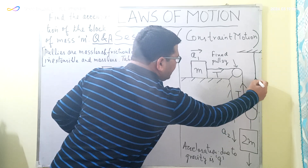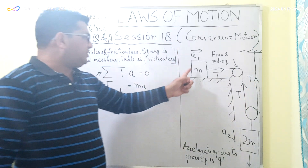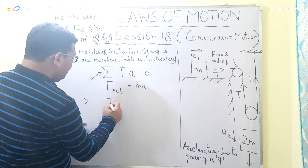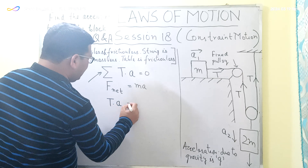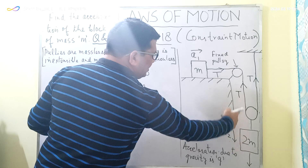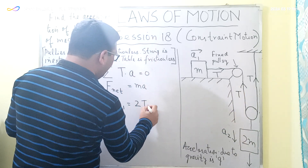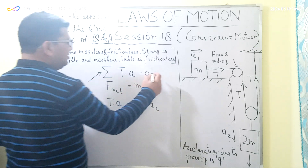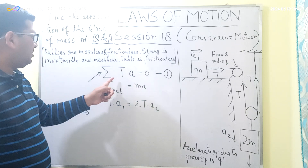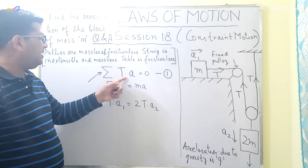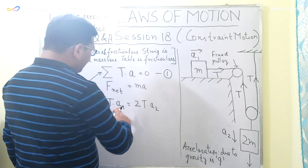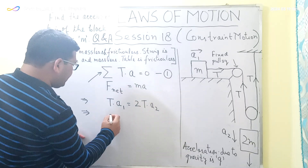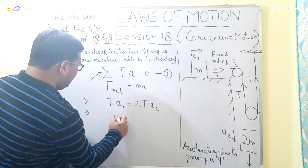Tension always acts away from the body. Applying the constraint equation T·A = 0: for block M the tension is T with acceleration A1, and for block 2M the total tension is 2T with acceleration A2. This gives T·A1 + 2T·A2 = 0, from which we get the relation A1 = 2 times A2.